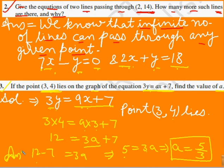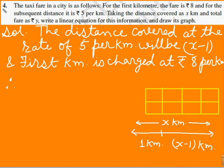In this way अगर हमें कोई point के coordinates दिये हैं और वो equation पर lie करते हैं, तो उसे satisfy करके हम A की या K की या कोई भी constant की value find कर सकते हैं। Now come to Question 4: the taxi fare in a city is as follows - for the first kilometer, the fare is rupees 8, and for the subsequent distance, it is rupees 5 per kilometer। Taking the distance covered as x kilometer and total fare as rupees y, write the linear equation and draw its graph।